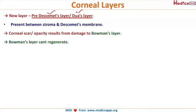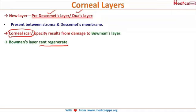Another important point is corneal scarring, which is a very common condition in our country and the leading indication for corneal transplantation. The reason scars occur and don't heal is because Bowman's layer cannot regenerate once injured — it does not regenerate and heals by scarring, which obviously deteriorates the vision of the patient.